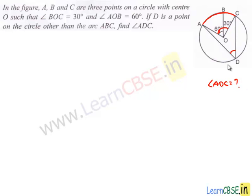How do we find it? We know that the angle subtended by the arc at the center of the circle is equal to two times the angle subtended by the same arc on the remaining part of the circle.